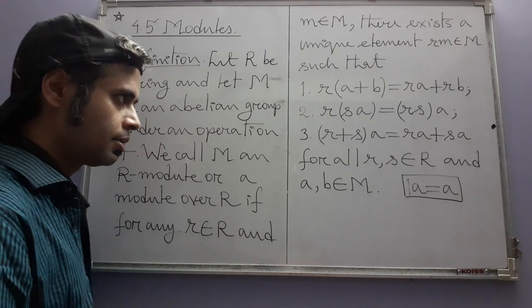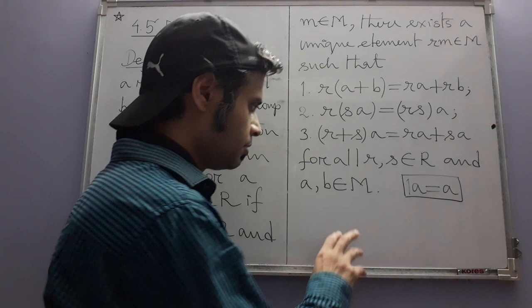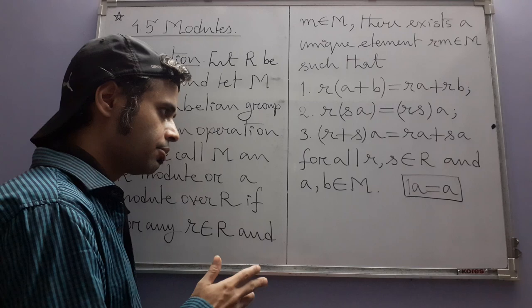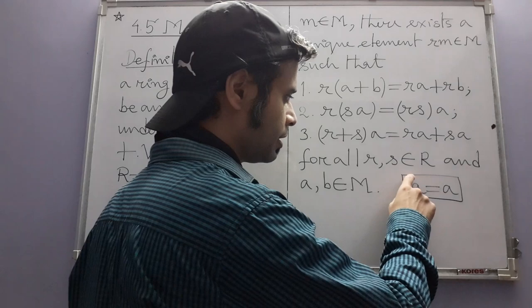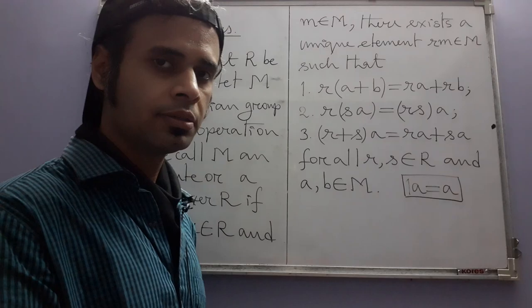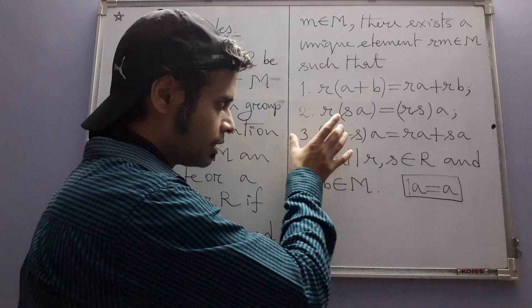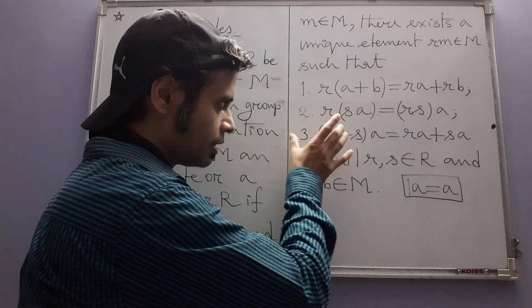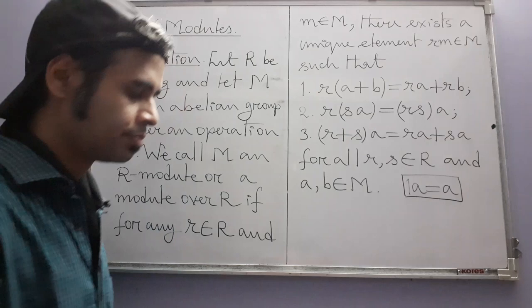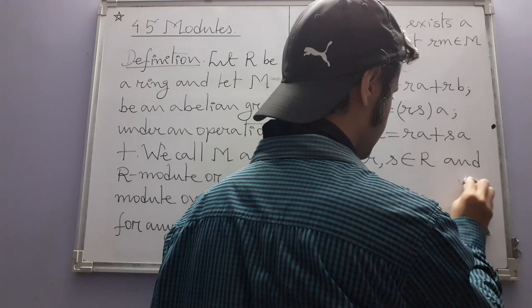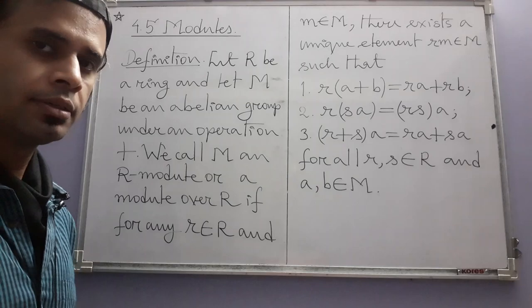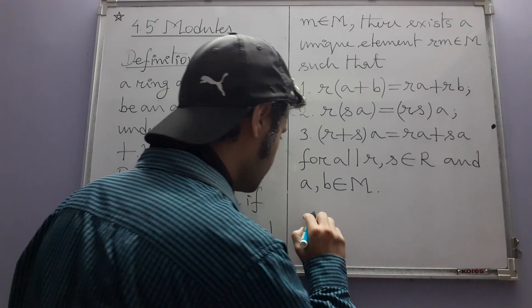That missing condition is 1·a = a. In a vector space, the scalars come from a field, and in a field there is always a unit element 1. One of the vector space conditions is that multiplying any vector by 1 returns that vector. However, in a general ring there is no guarantee of a unit element, and accordingly that condition is also missing.